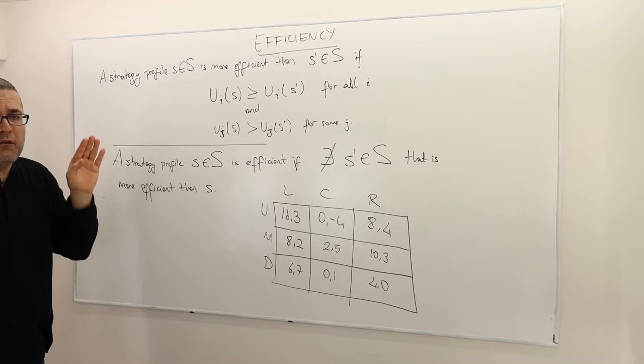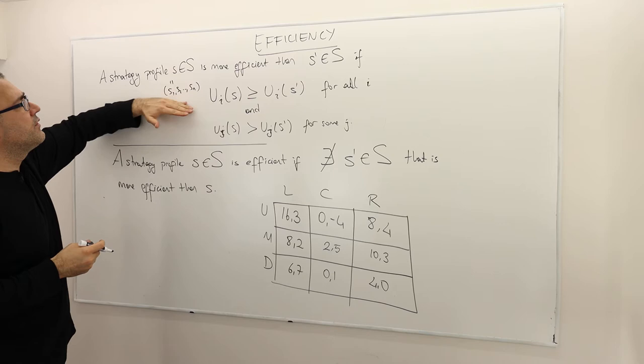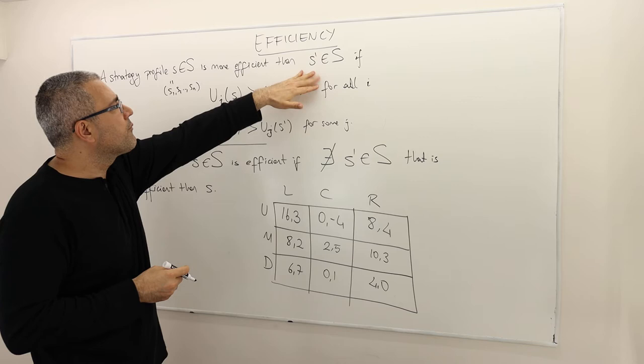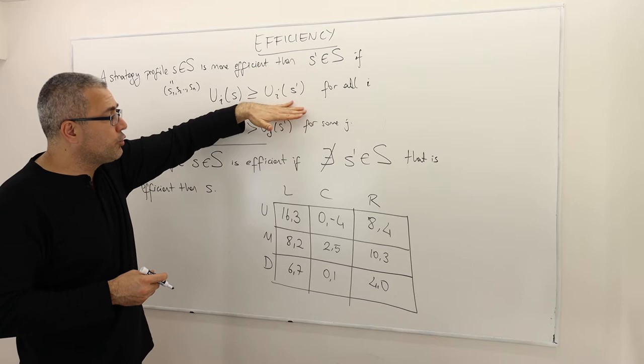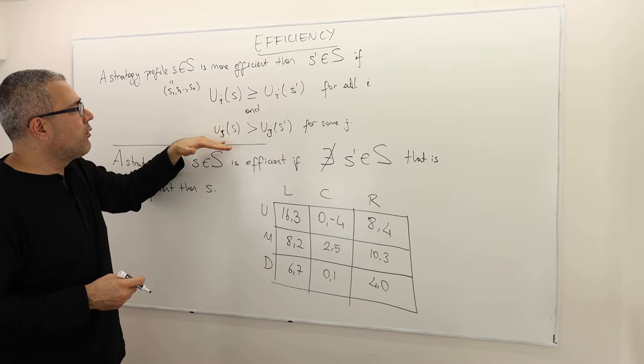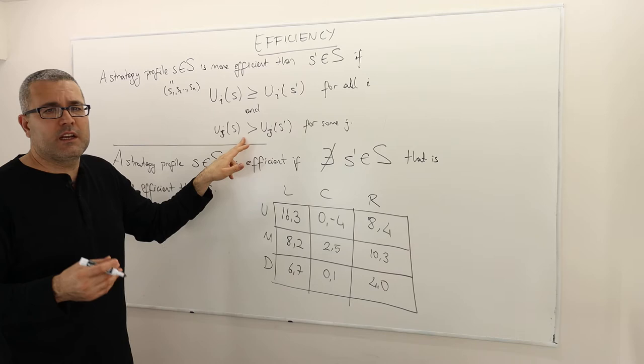So a strategy profile S is a vector S1, S2, all the way to Sn, depending on the number of players. This vector of strategies is more efficient than another strategy profile S prime if every player gets at least as high a utility payoff from S as from S prime, but some of them get a strictly higher payoff. So everybody weakly prefers S to S prime, and some players strictly prefer S to S prime.